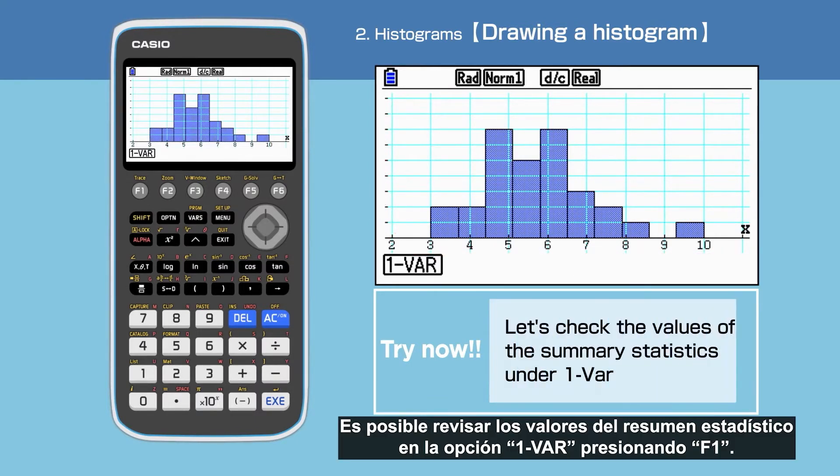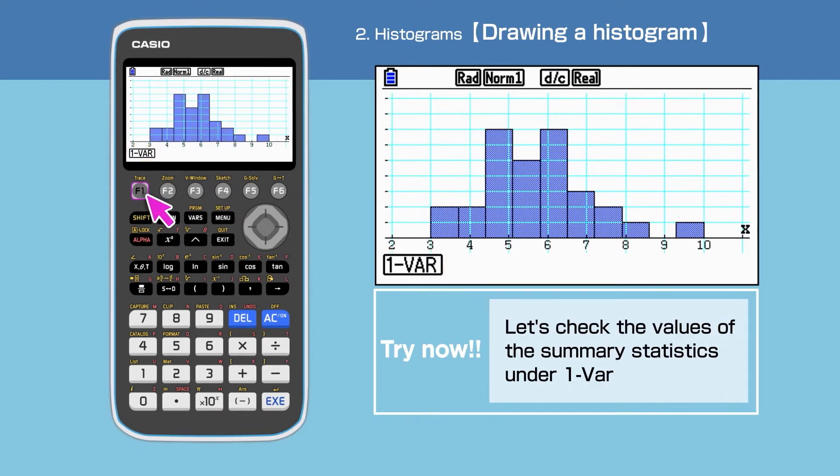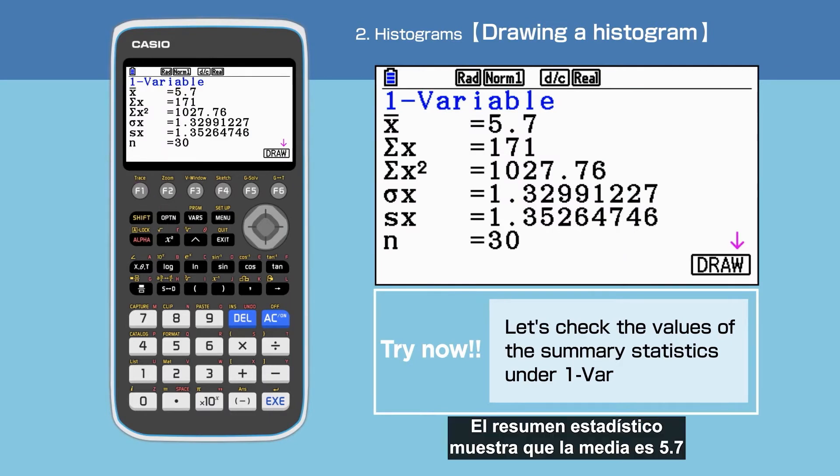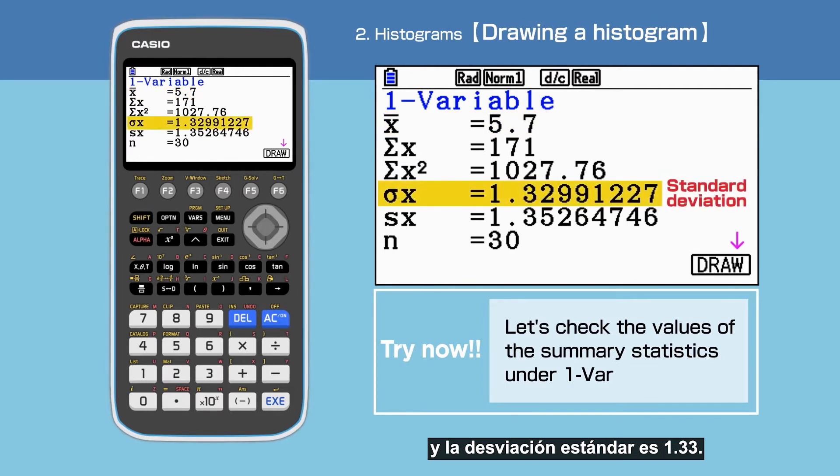It is possible to check values of the summary statistics under one bar. The summary statistics show that the mean is 5.7 and the standard deviation is 1.33.